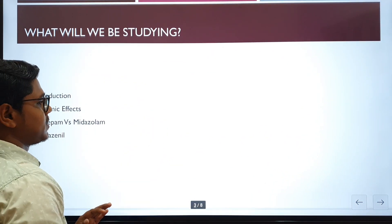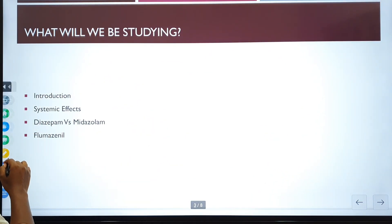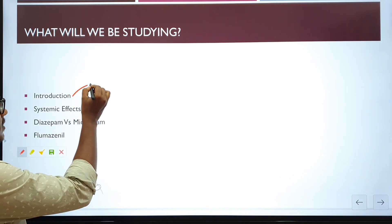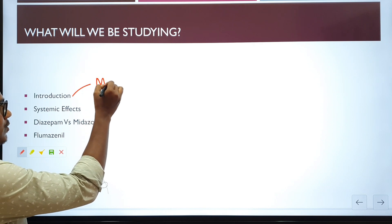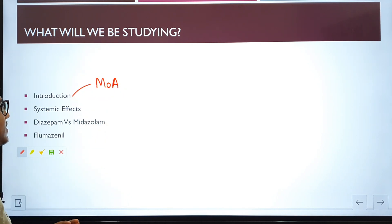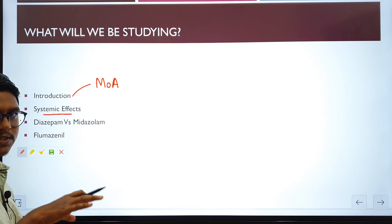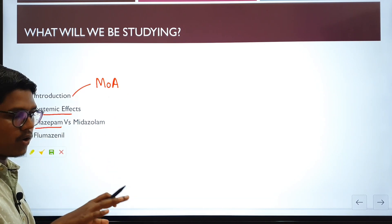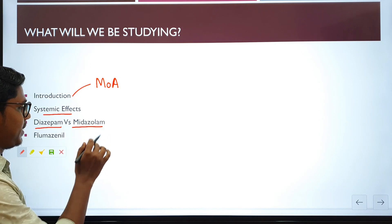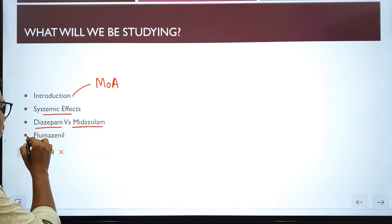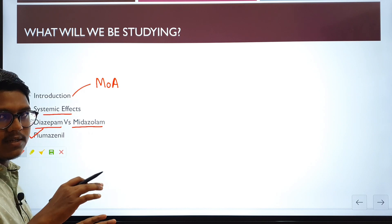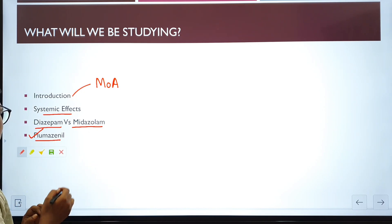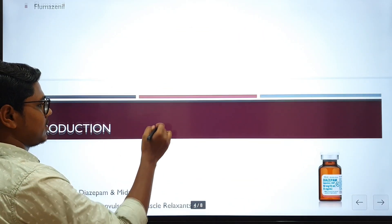So what will we be studying today? We will be studying the introduction. This is a very basic pattern introduction. In the introduction we will study the mechanism of action, and we will also study the systemic effects of Benzodiazepines. We will compare the two available drugs, diazepam and midazolam, in different aspects. And we will discuss the antagonist, the Benzodiazepine antagonist, which is Flumazenil.